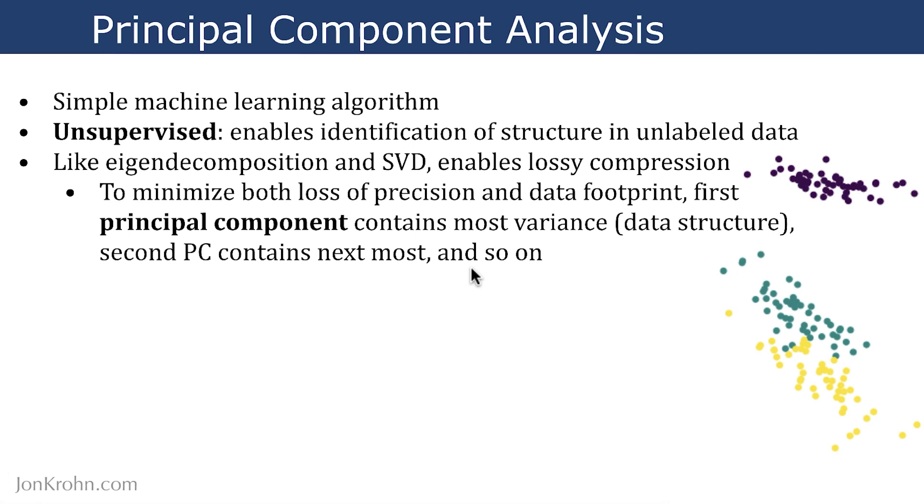So as a process of applying this unsupervised machine learning method, PCA, to your unlabeled data, it will come out with a series of components. And that first component is the most important. It contains the most variance, the most data structure in your data set.